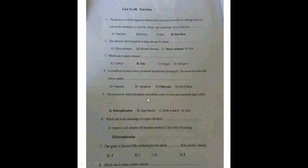The process in which phosphate and nitrite enter rivers and increase algae growth — the macronutrients entering soil through this process is called eutrophication, which nourishes the soil for plant growth. Which one is a disadvantage of organic fertilizer?